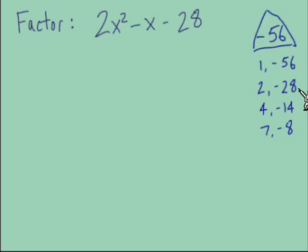Here are the pairs of factors that multiply together to equal -56. From these pairs, I'm looking for the pair that adds together to equal -1. It's our last pair on the list: positive 7 and negative 8.